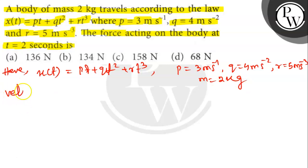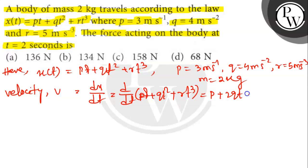Velocity V = dx/dt. So d/dt of (pt + qt² + rt³) = p + 2qt + 3rt².